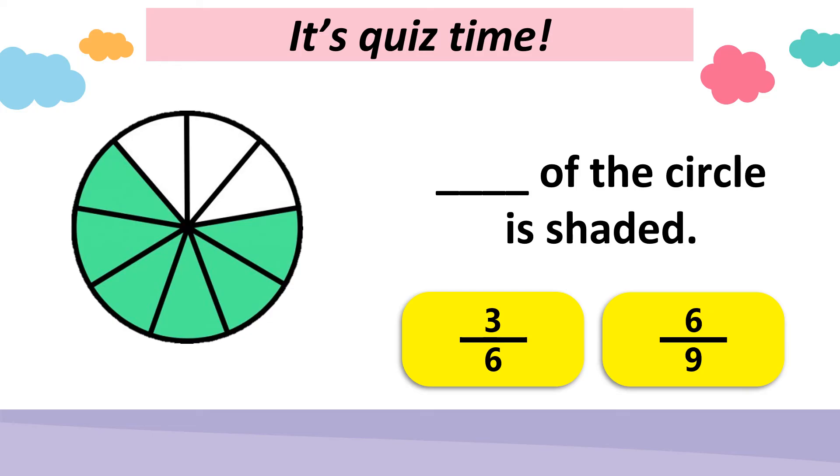Next one is blank of the circle is shaded. Is it three out of six is shaded? Or six out of nine of the circle is shaded? Remember, the denominator represents the total number of parts. Just now, of the same circle we counted, had nine total number of parts. So this must be correct. So let's look at the numerator. Is it six? One, two, three, four, five, six. Yep, it's six out of nine. This is correct.